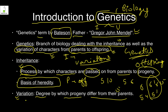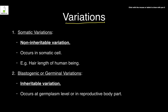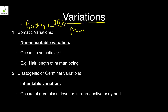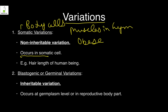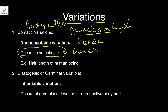Variations can be two types. Some are related to your body cells and are not transmitted. For example, if your father builds muscles in the gym and becomes very bulky, you will be born as a normal kid. The variations are occurring only in the somatic cells — his muscle cells — while the genes remain the same.